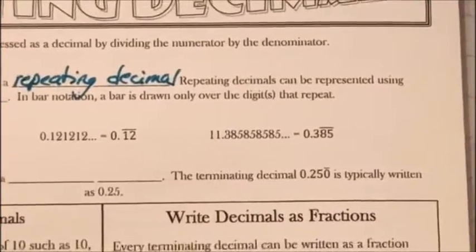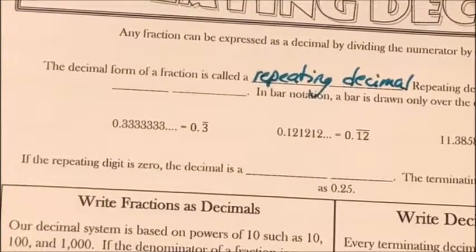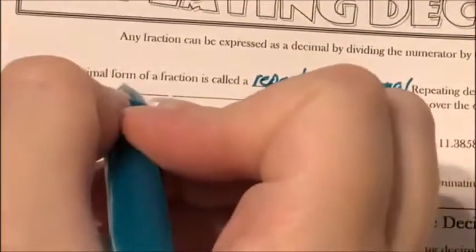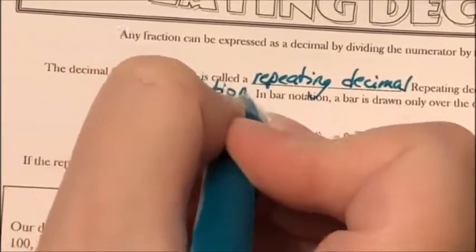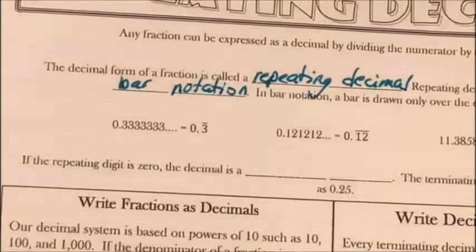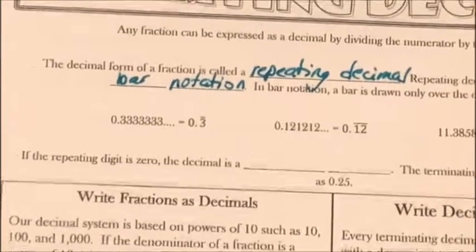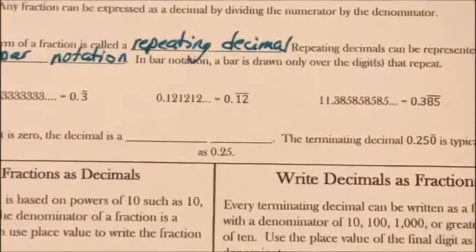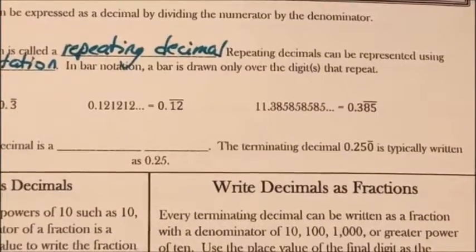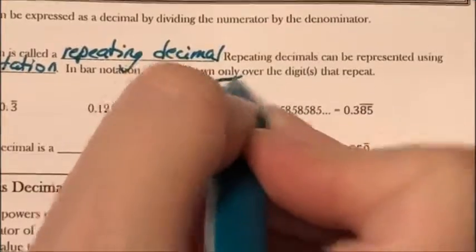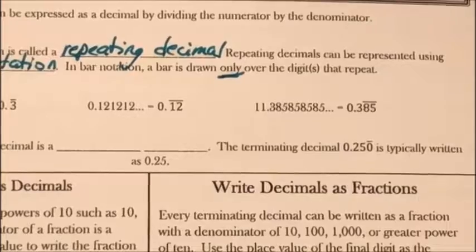Repeating decimals can be represented using bar notation. In bar notation, a bar is drawn only over the digit or digits that repeat — only over what repeats. That's very important: don't draw the bar over something that doesn't repeat.